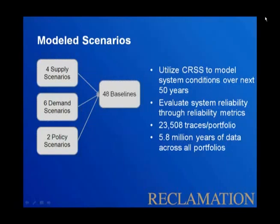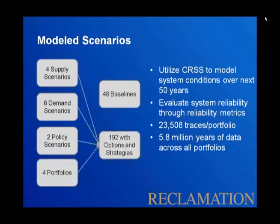When you combine all of the different scenarios — the four supply scenarios, the six demand scenarios, and our two policy scenarios — it results in 48 baseline scenarios simulated using CRSS. Due to the varying number of realizations of the different supply scenarios, this results in over 20,000 individual realizations for our baseline scenario. When you combine that with our four portfolios, that results in 192 additional scenarios. Across all 240 different scenarios, there's over 5.8 million years of data simulated. As we start to look at the results, we are trying to roll up all of this data into something digestible and simple.